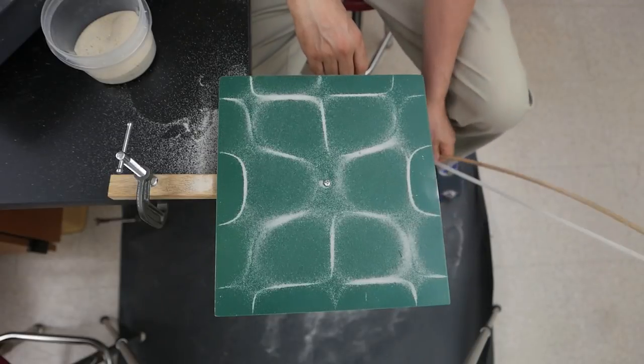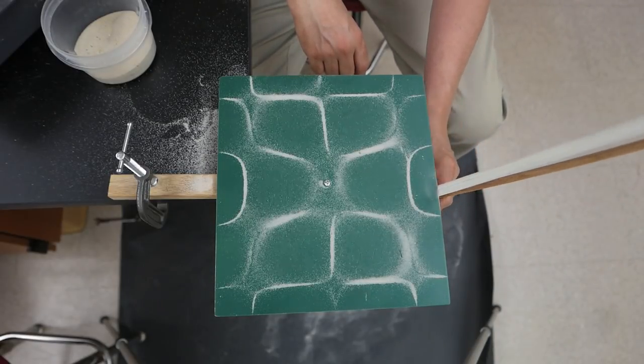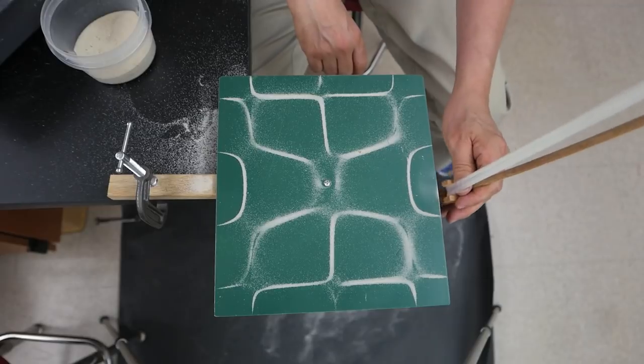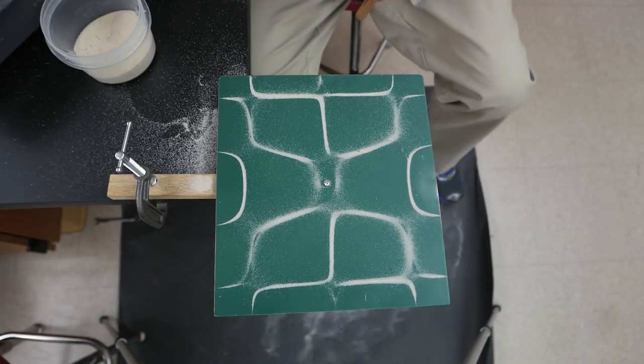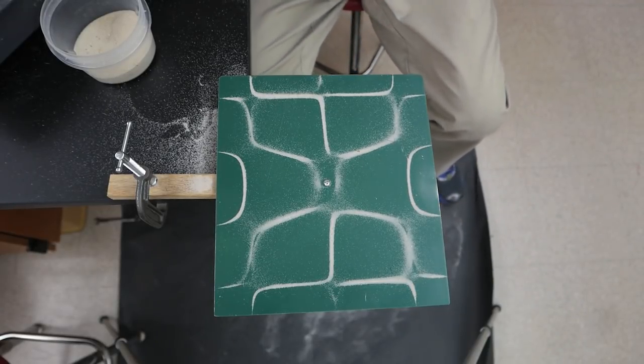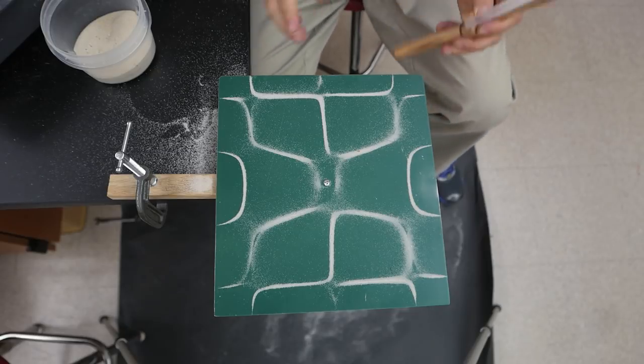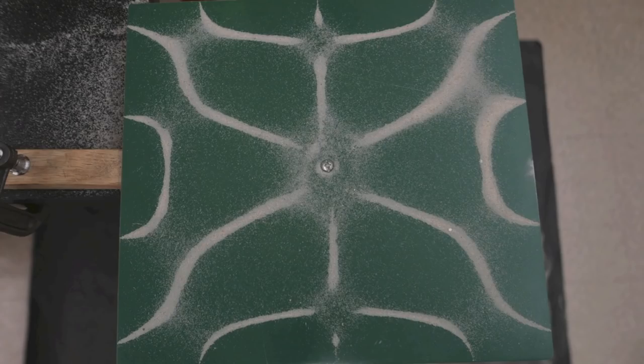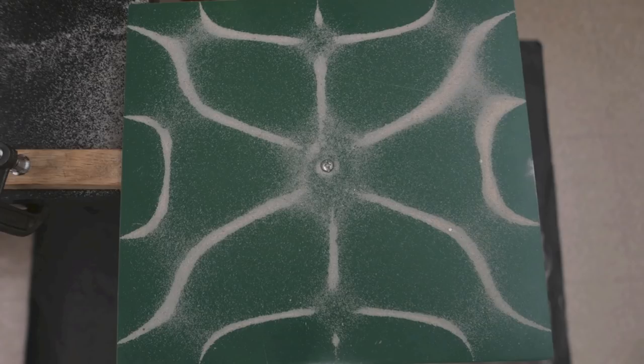He found that as he rubbed his bow across the plate certain parts of it would vibrate more than others. The parts with a lot of vibrations were called the antinodes and the sand tends to be driven out of these areas and settle into the areas where there's less vibrations and this section is called the nodes. Generally as the plates are forced to vibrate at a higher frequency the patterns become more complex.